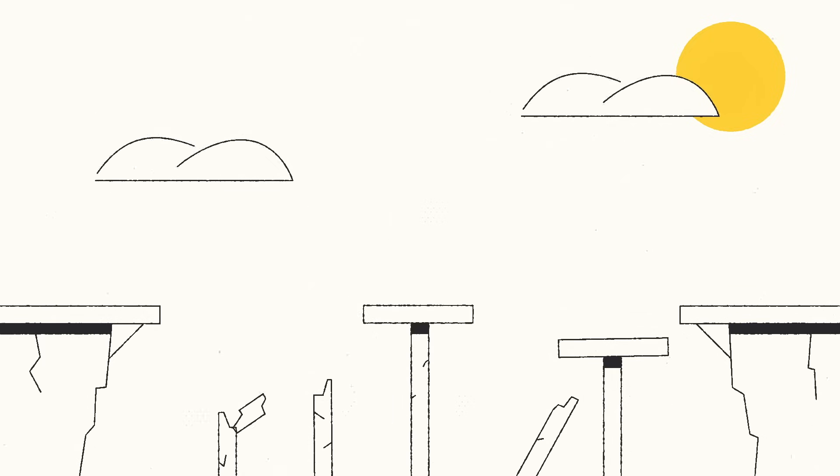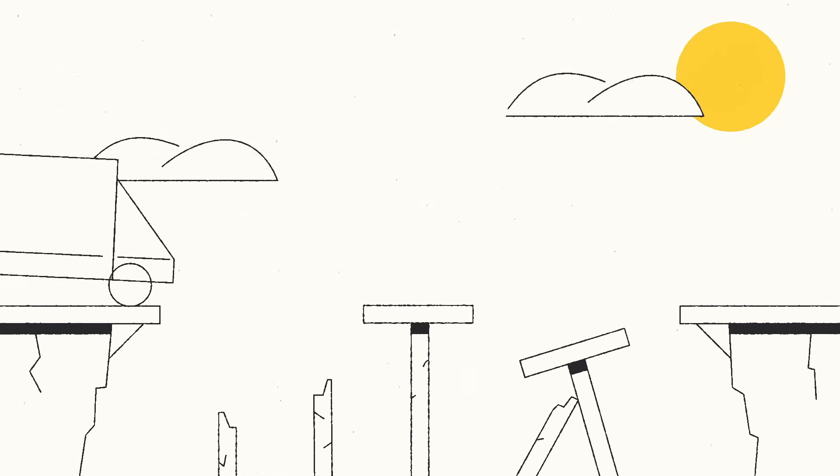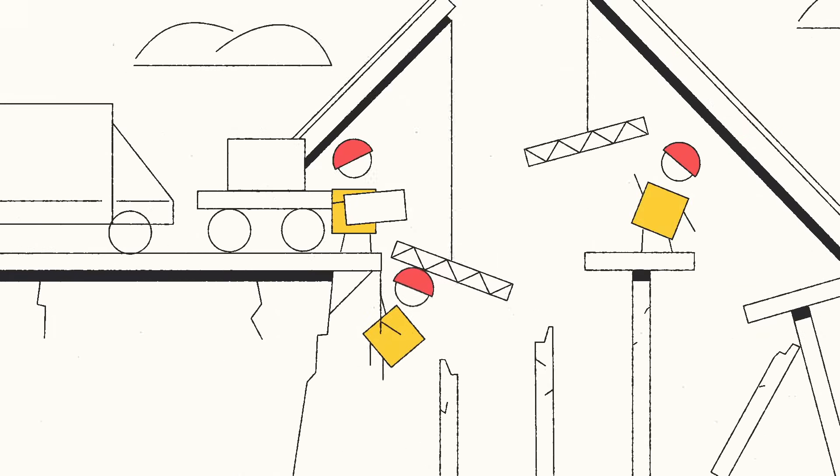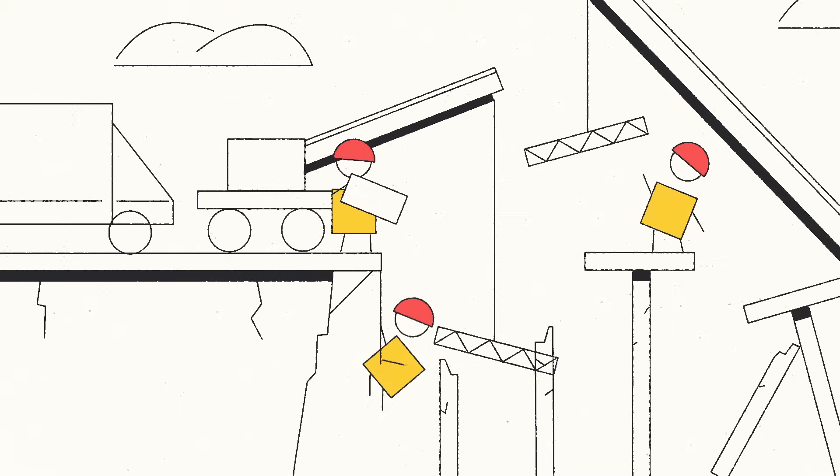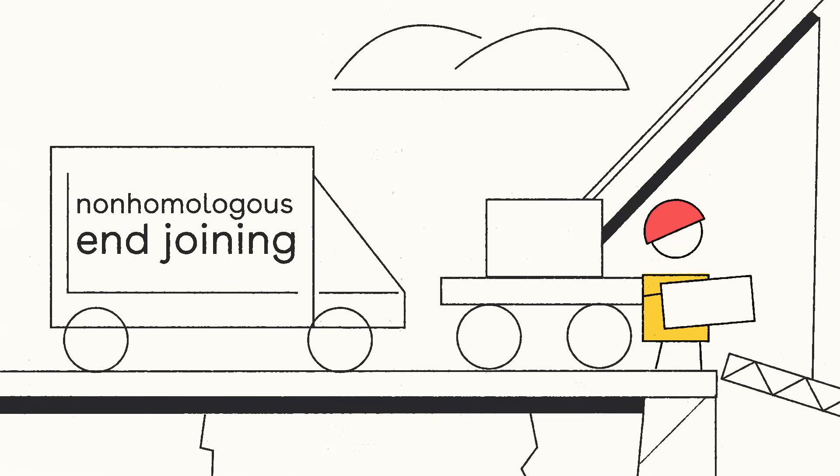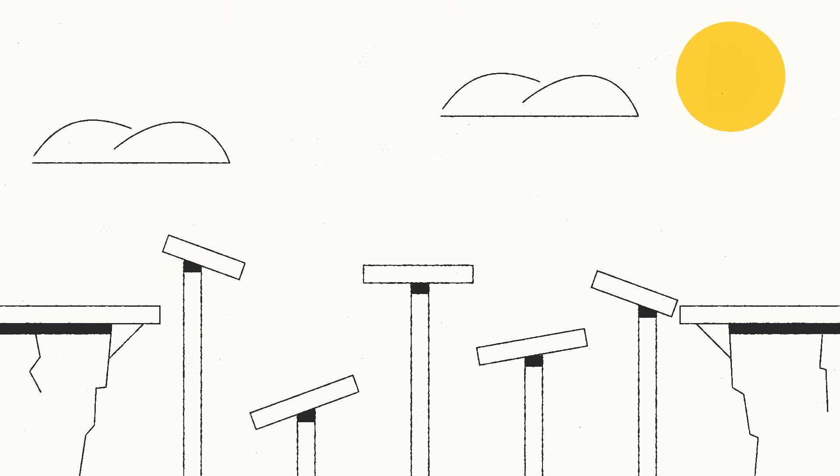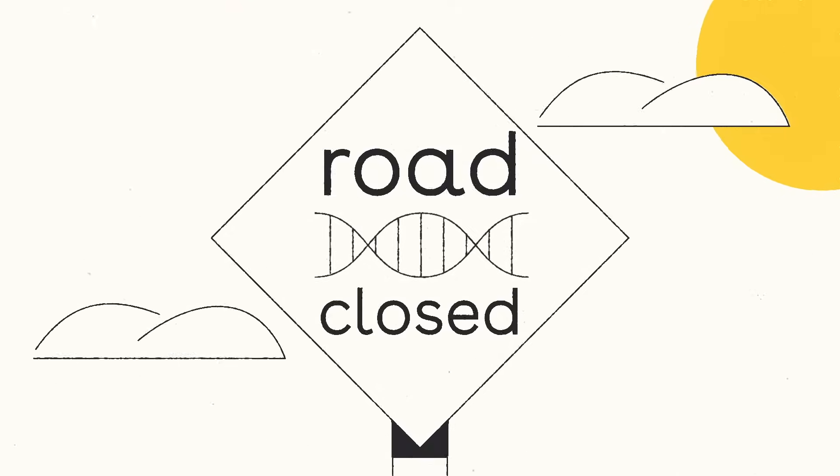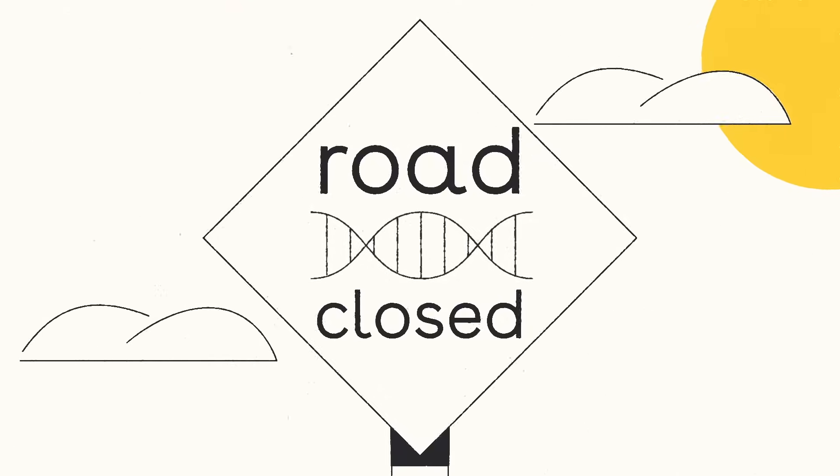Once the DNA is cut, the cell will try to repair it. Typically, proteins called nucleases trim the broken ends and join them back together. But this type of repair process, called non-homologous end joining, is prone to mistakes and can lead to extra or missing bases. The resulting gene is often unusable and turned off.